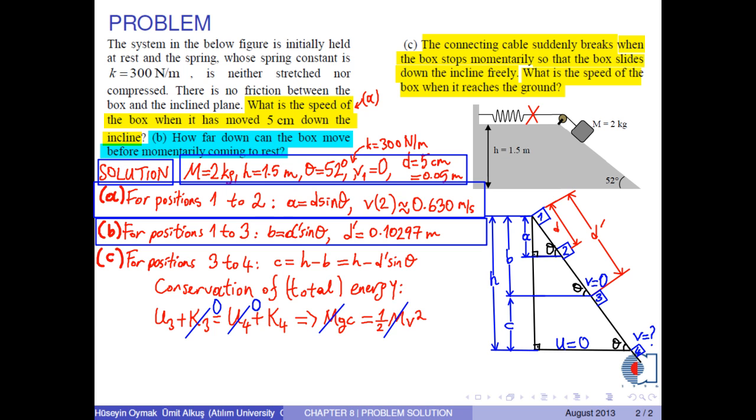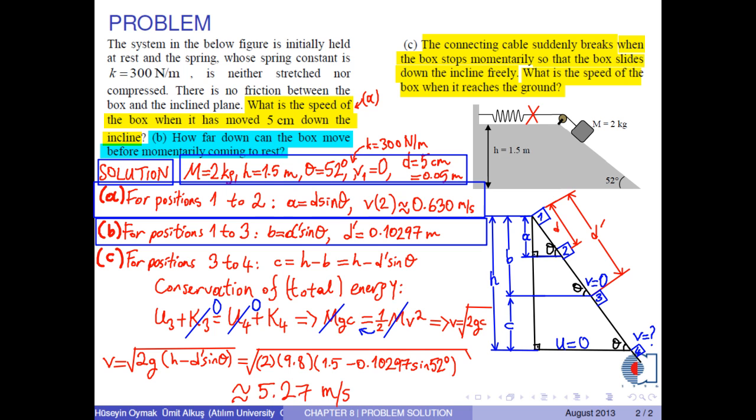Now, we write the expression for C with the corresponding numerical values. Therefore, we obtain the speed of the box when it reaches the ground as approximately 5.27 meters per second.